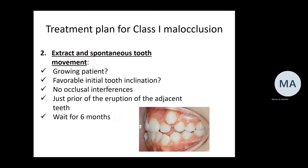Sometimes we can extract teeth and expect spontaneous favorable tooth movement. Proper case selection is crucial: the patient should still be growing, have favorable initial tooth inclination and angulation, have no occlusal interferences, and the ideal timing is just prior to permanent tooth eruption — during the exfoliation of deciduous teeth and eruption of permanents. After extraction, wait six months; if nothing happens by then, no further spontaneous movement will occur. The majority of spontaneous tooth movement happens within the first six months.